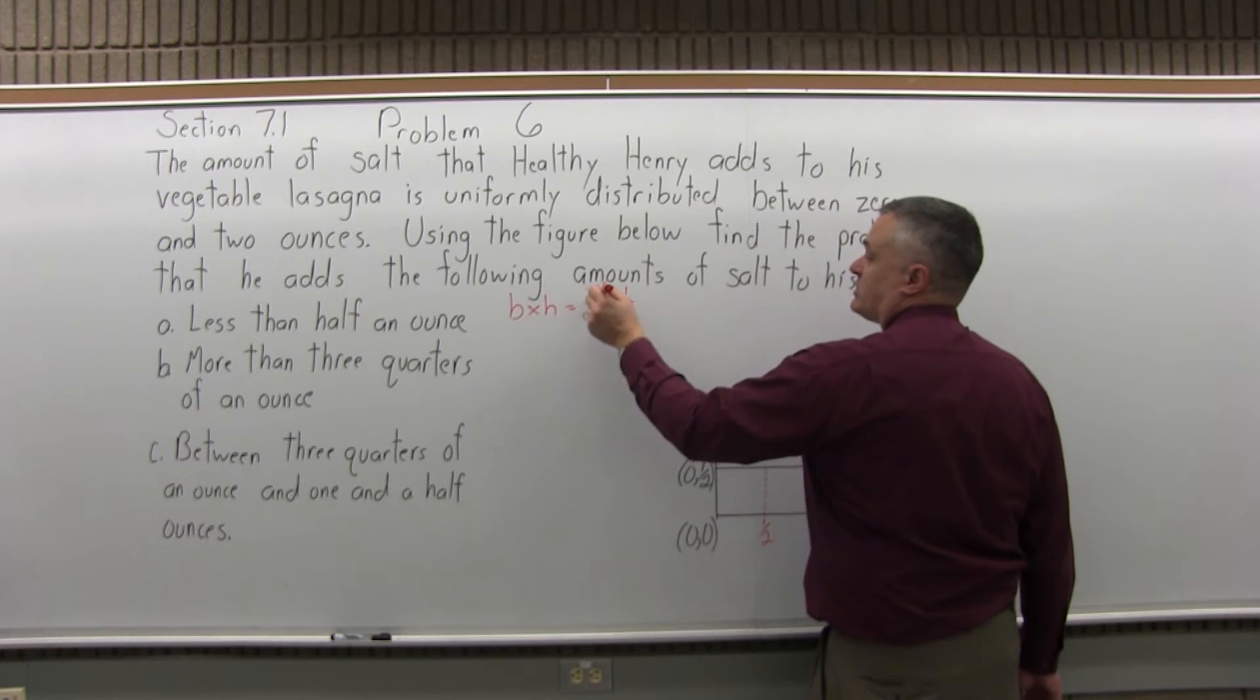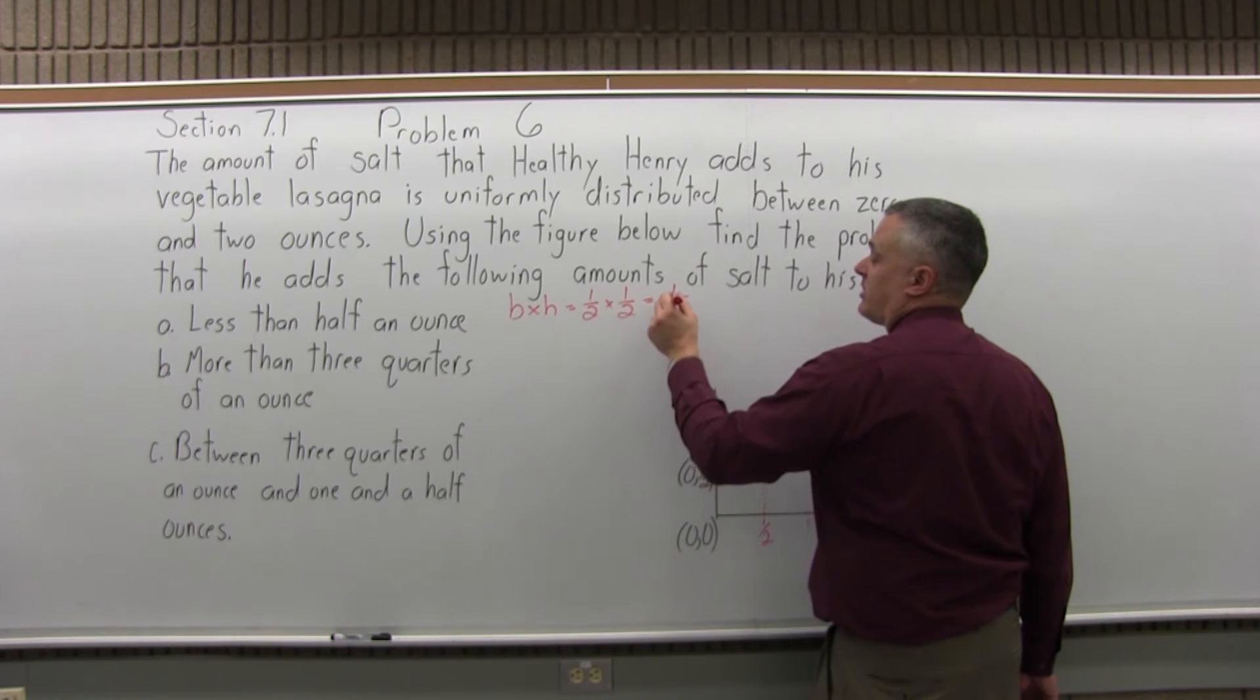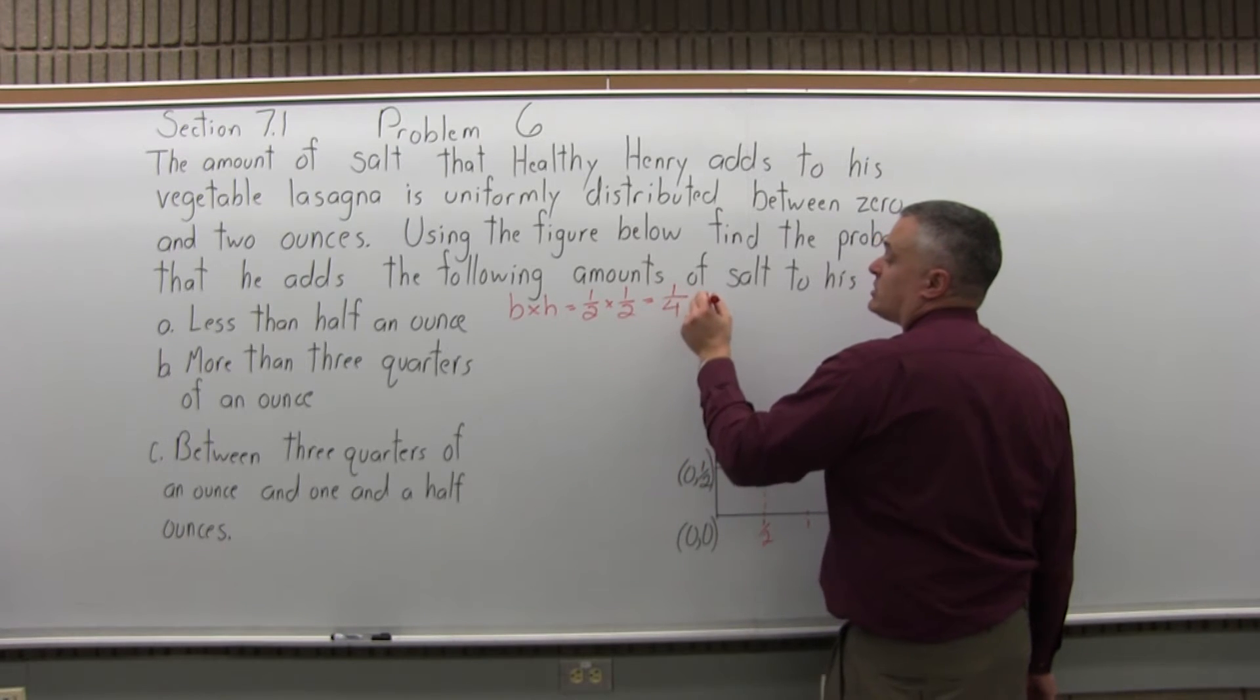So you multiply fractions top times top, 1 times 1 is 1, bottom times bottom, 2 times 2 is 4. So 1 fourth.